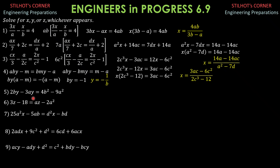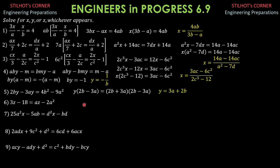Here, factor out Y, giving Y times the quantity (2B minus 3A). The other factor is a difference of two squares with factors (2B plus 3A) and (2B minus 3A). We can cancel (2B minus 3A). Therefore, Y equals 2B plus 3A, or equivalently 3A plus 2B.